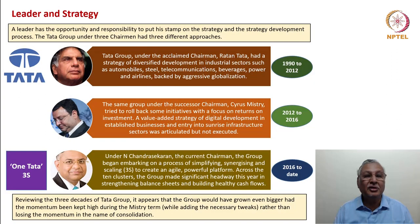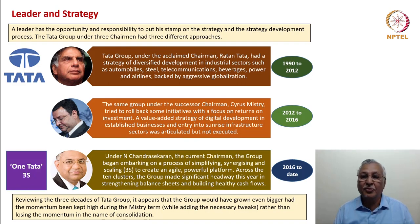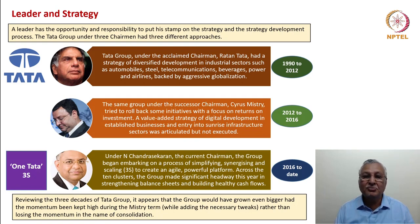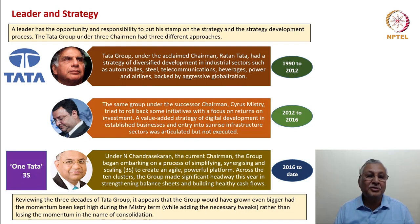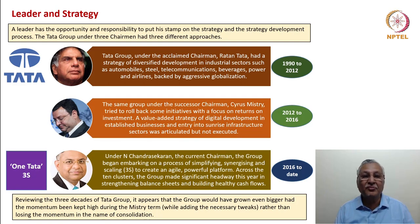A leader has the opportunity and responsibility to put his stamp on the strategy and the strategic development process. The Tata Group under three chairmen had different approaches. Under Ratan Tata, the strategy was diversified development in industrial sectors such as automobile, steel, telecommunications, beverages, power and airlines, backed by aggressive globalization. When he took over in 1990, his first objective was to consolidate the disparate companies in the group into one cohesive group umbrella. Between 1990 and 2012, he tried to reduce non-core businesses, enhance core businesses and aggressively globalize.